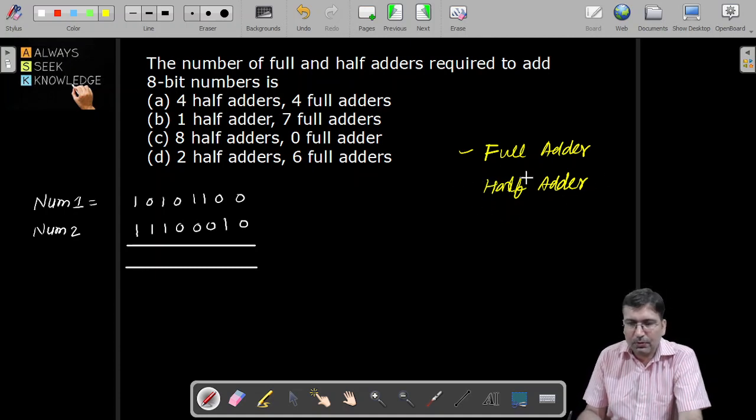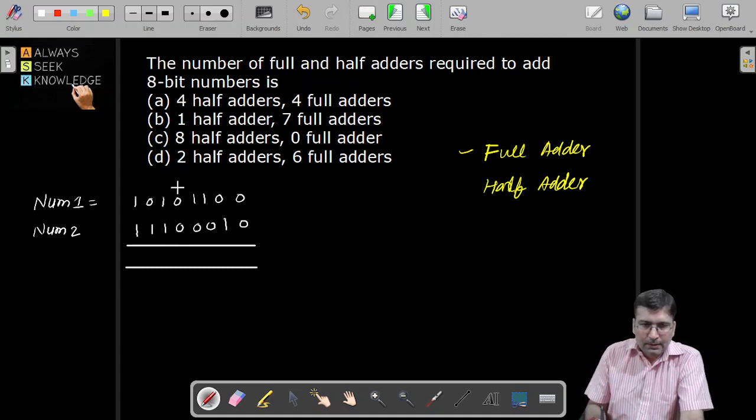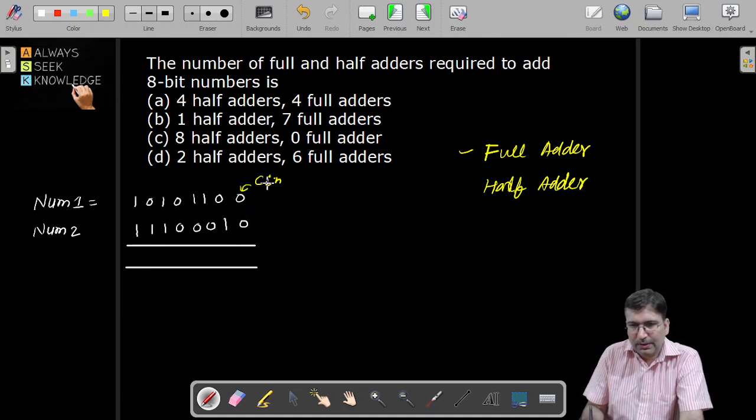At the initial level, because we don't have any input carry, there is no chance that we can get it. The very first bit does not get any input carry, so that means to add these two bits we can use half adder as well.